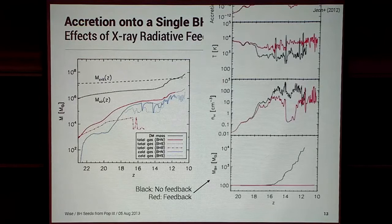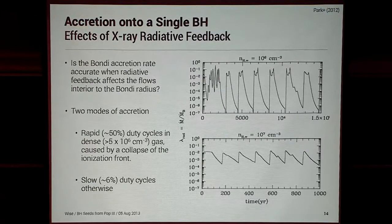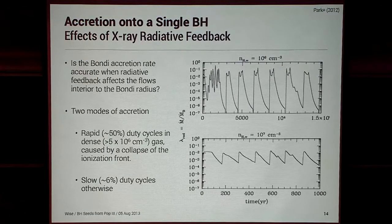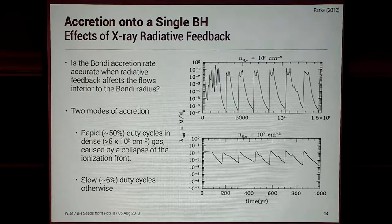I also want to point out Quang Ho Park's work in his thesis — he may talk about this later in the week. These simulations assume the Bondi accretion rate, but they studied the accretion flows within the Bondi radius. They found two modes of accretion: above some critical density, you can have a rapid duty cycle of around 50%, caused by the ionization front from radiative feedback going out and then collapsing as gas falls back in. Without that, you get a slow duty cycle of around 6%.